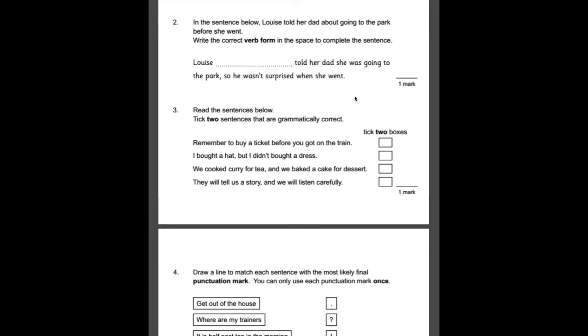Number two, in the sentence below, Louise told her dad about going to the park before she went. Write the correct verb form in the space to complete the sentence. The correct verb form to go in here should be Louise had told her dad she was going to the park so he wasn't surprised when she went.